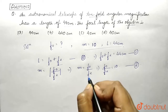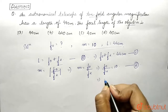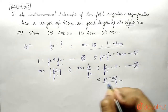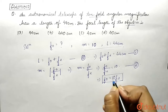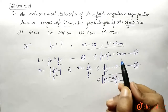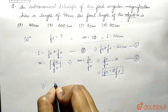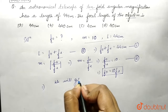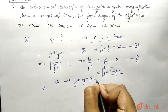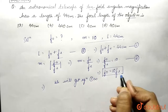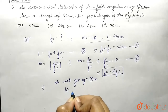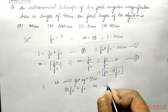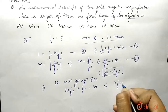From equation two, we can write fo equals 10 fe. Substituting this value of fo into equation one: 10 fe plus fe equals 44, so 11 fe equals 44, giving fe equals 4 centimeters.